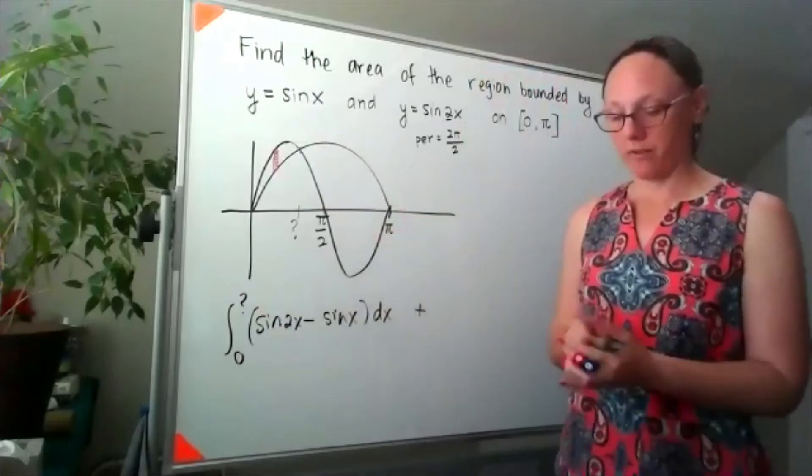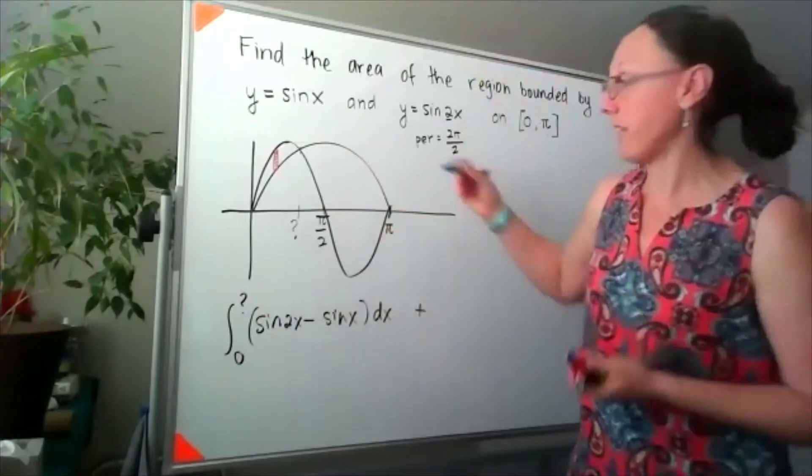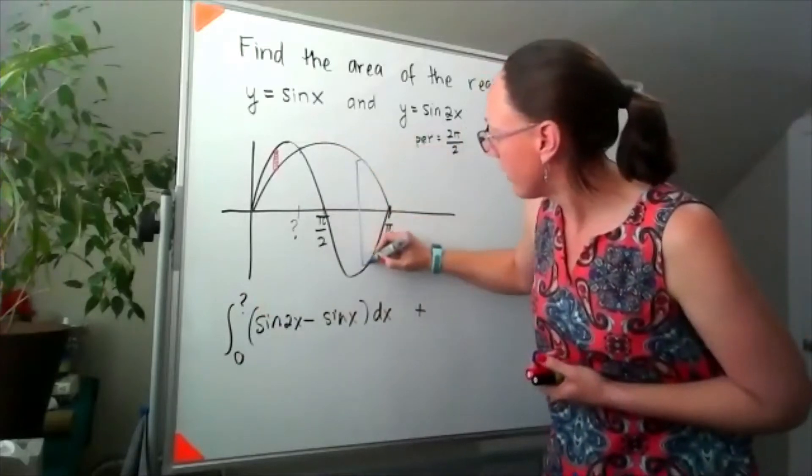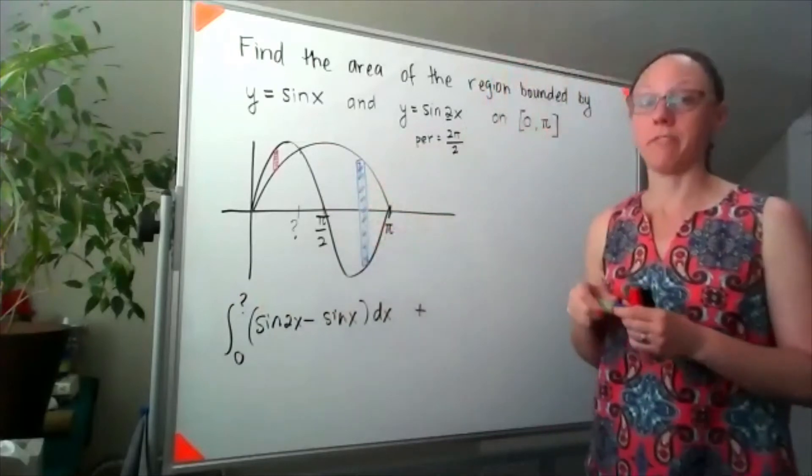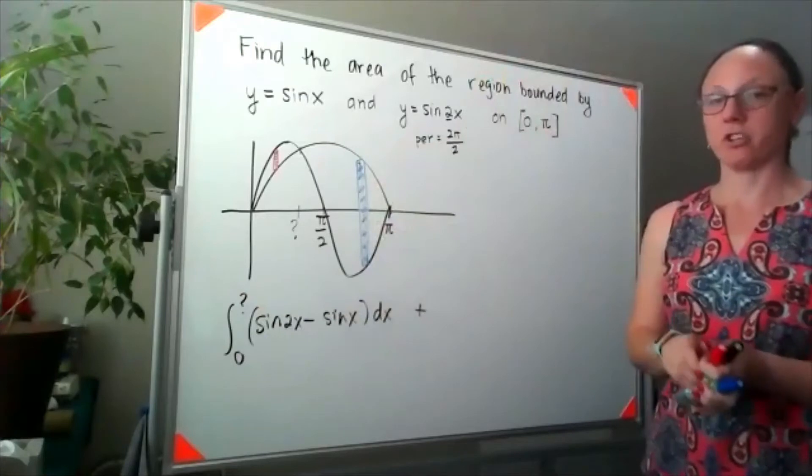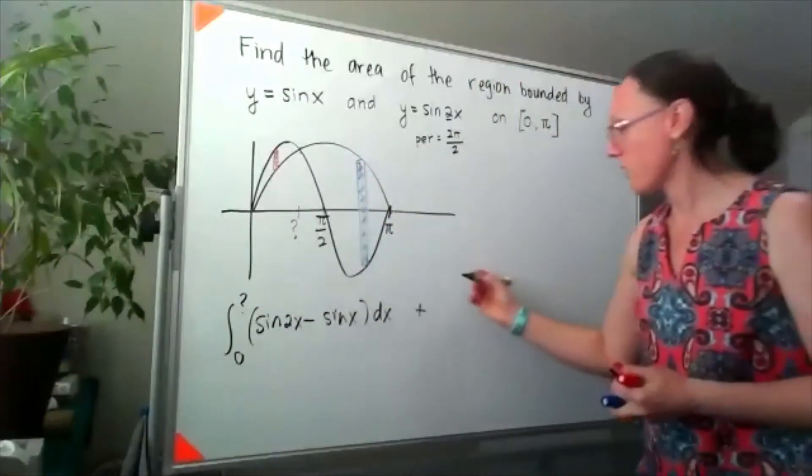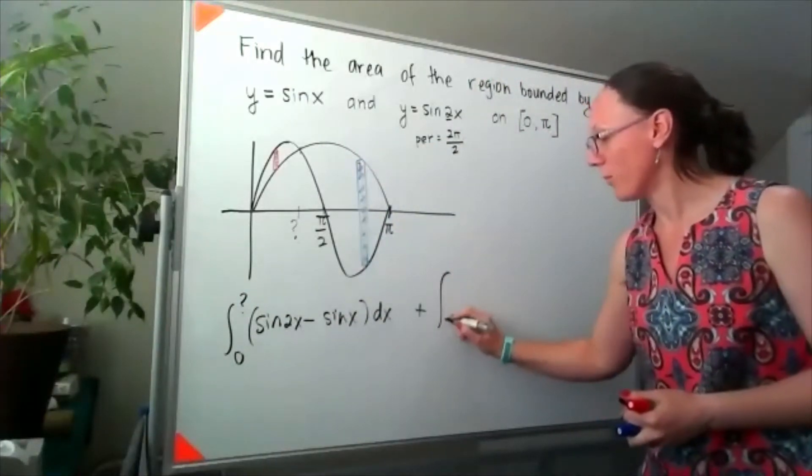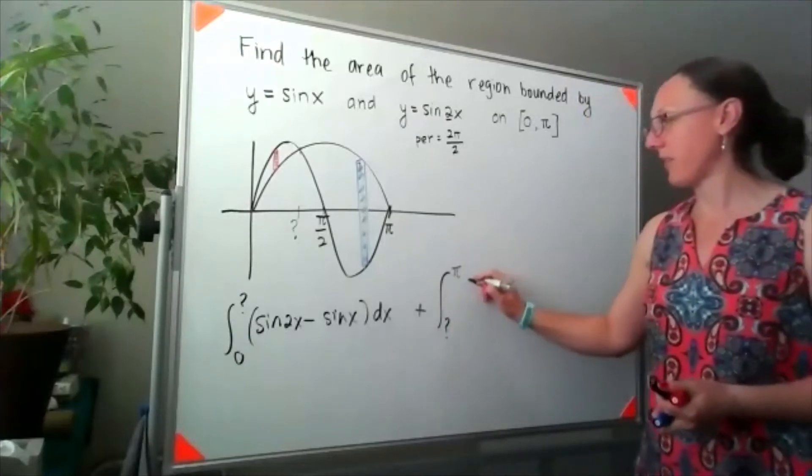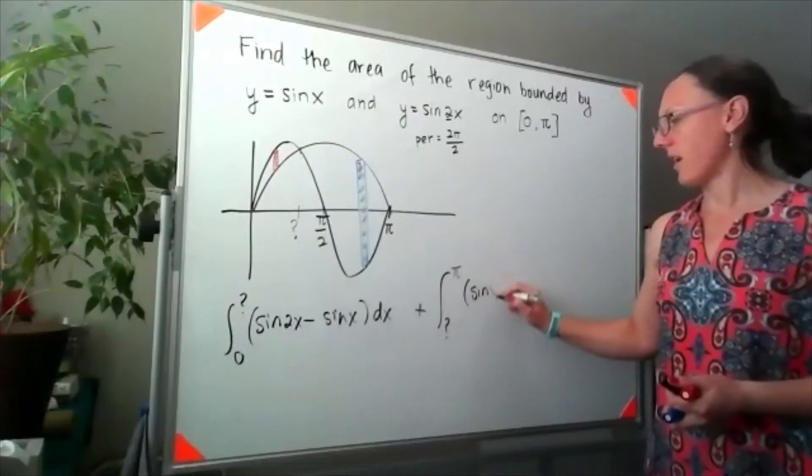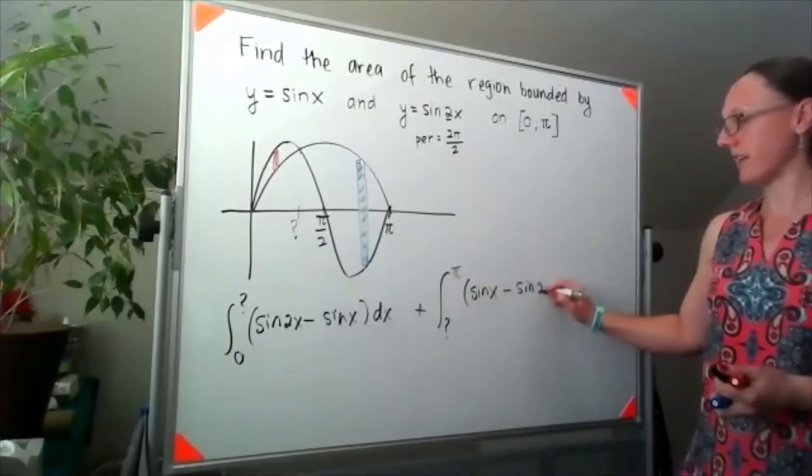In the second part of our region here, if I draw an arbitrary cross-section, I know that our top function is sine of x and our bottom function is sine of 2x. So now I'd be going from whatever that value is to pi, sine of x minus sine 2x.